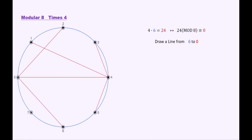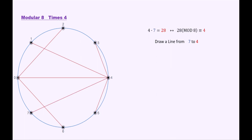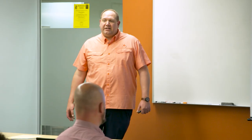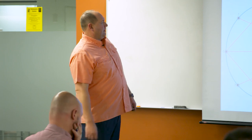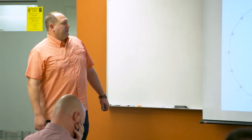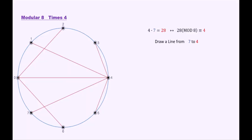4 times 5 makes 20, 20 mod 8 is 4, so connect 5 to 4. 4 times 6 is 24, 24 mod 8 is 0, so connect 6 to 0. 4 times 7 makes 28, 28 mod 8 is 4, so connect 7 to 4. I don't do 4 times 8 since that's just 0 again. So hopefully you have a picture that looks like that — a little bit more exciting than the other one.